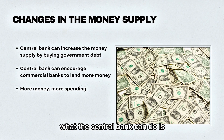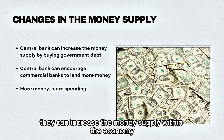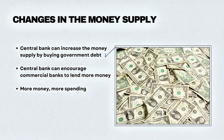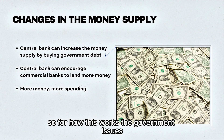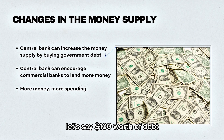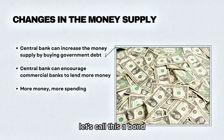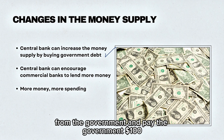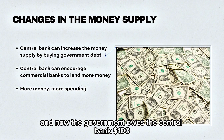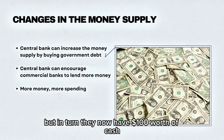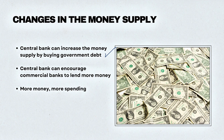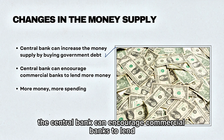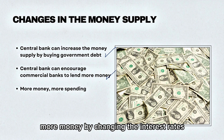The central bank can increase the money supply within the economy by buying government debt. The government issues, let's say, $100 worth of debt — let's call this a bond. The central bank will buy this bond from the government and pay the government $100. Now the government owes the central bank $100, but in turn they now have $100 worth of cash which they can spend into the economy.